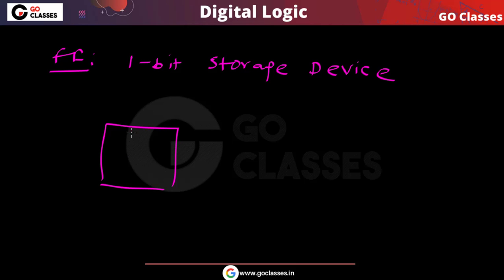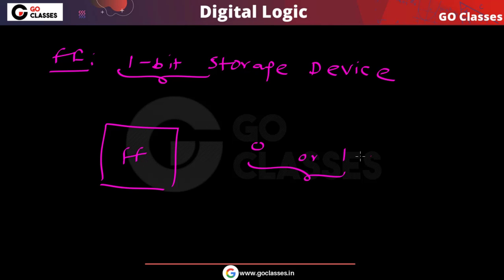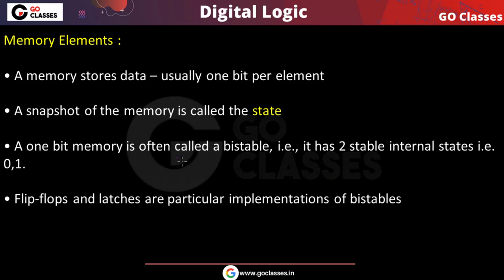In a flip-flop, we can store either 0 or 1. This is a one-bit storage, meaning you can store zero or one. That is the reason this flip-flop is also called a bistable device — bistable means two states. At any point in time, either this flip-flop is storing zero or storing one.